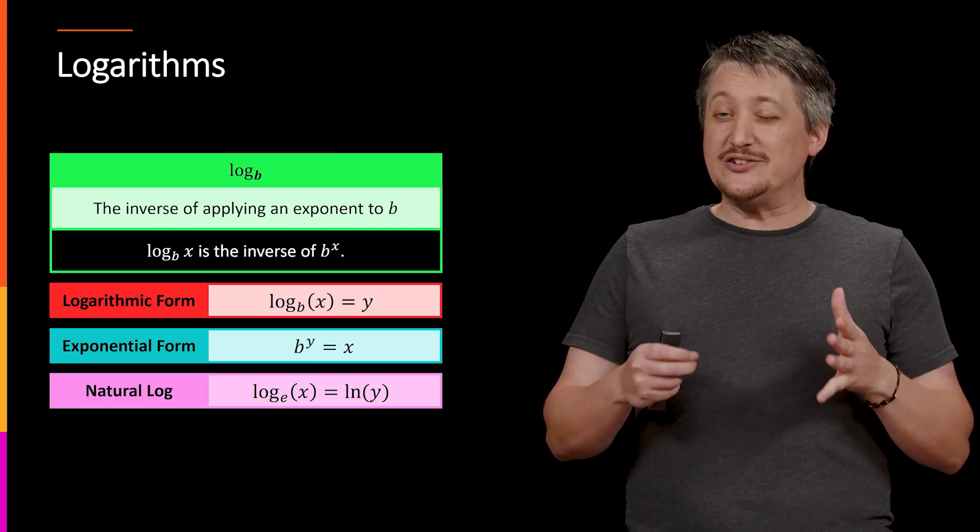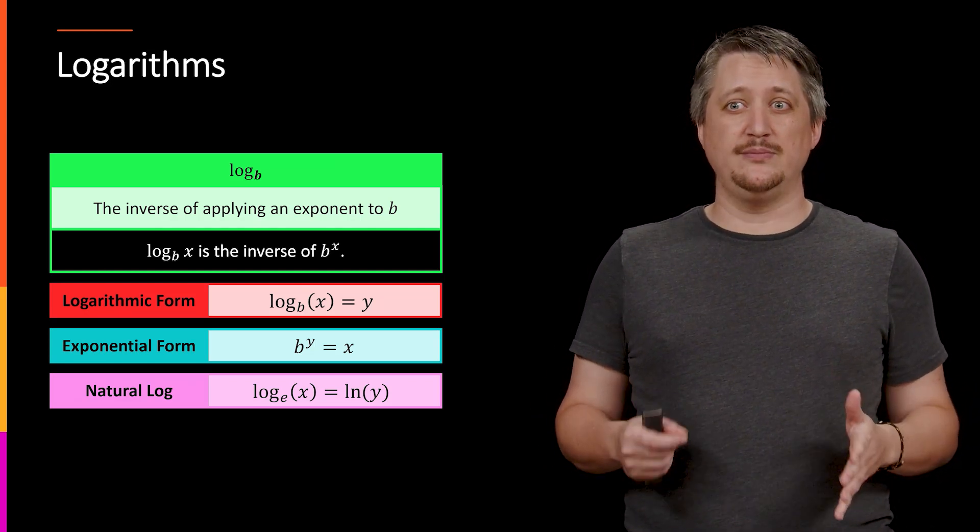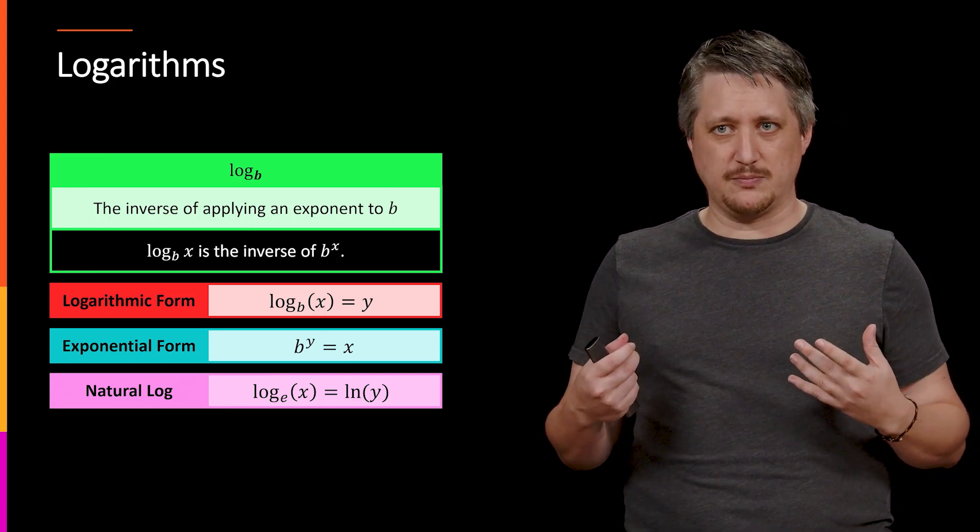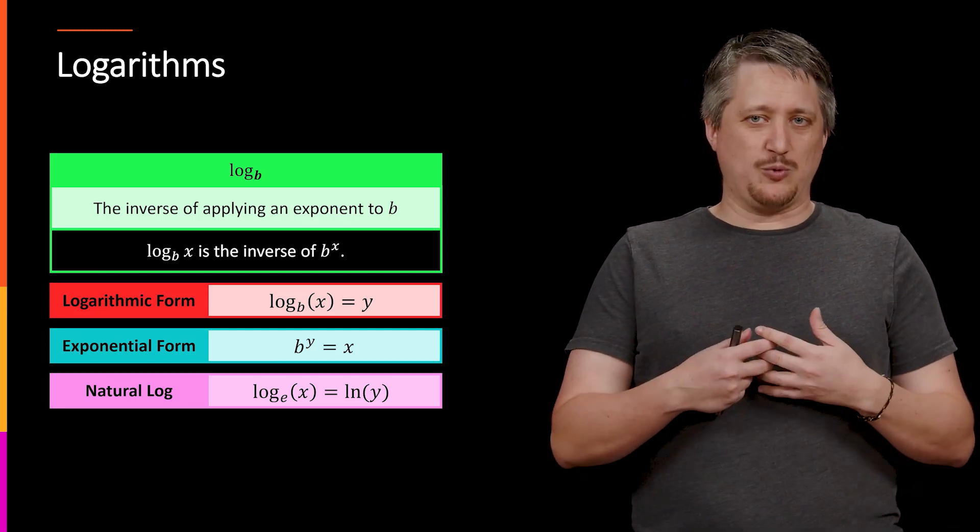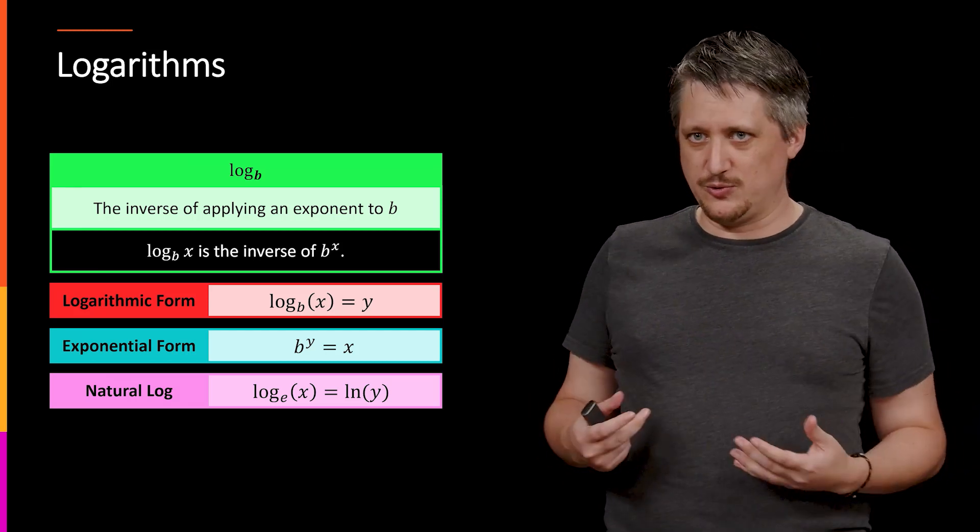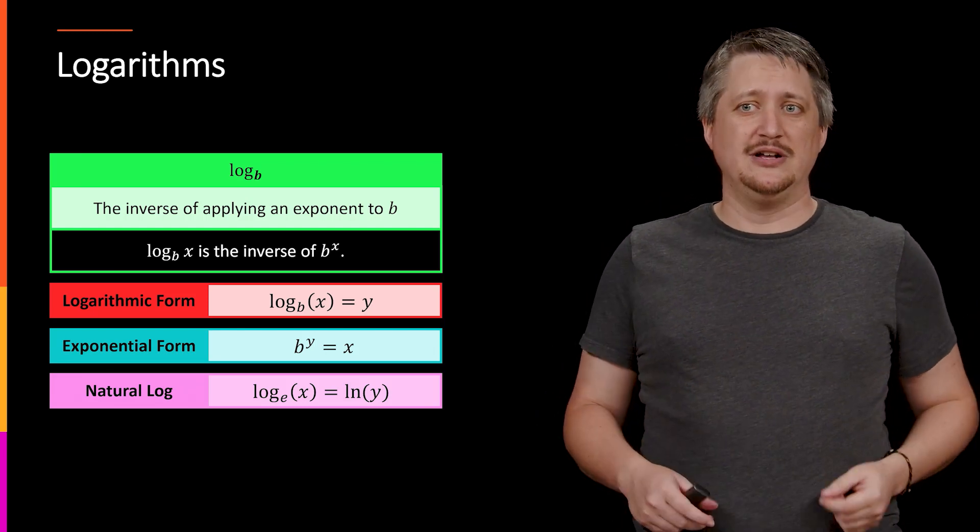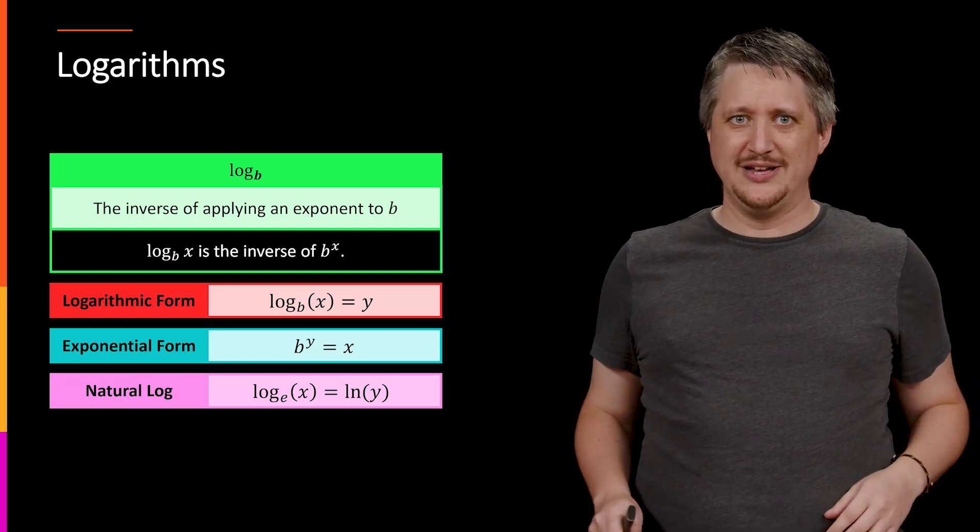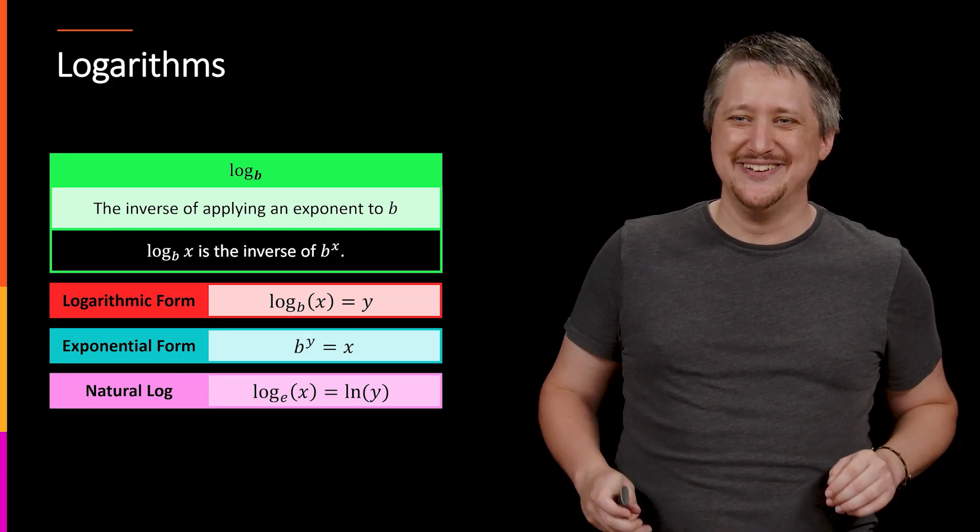But I want to really stress here that there's nothing special about natural log in terms of being different from other logs. So when we learn properties of logarithms, we learn different rules and different ways of manipulating logarithms that work with every base. It also works with natural log because natural log is just a particular base of a log. So a lot of times, students will sort of memorize a set of rules for log base b and then another set of rules for natural log, not realizing that they are literally the exact same laws.